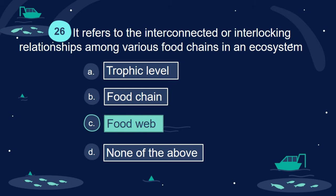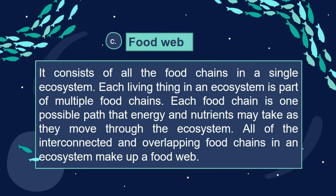Answer: C. Food web. It consists of all the food chains in a single ecosystem. Each living thing in an ecosystem is part of multiple food chains. Each food chain is one possible path that energy and nutrients may take as they move through the ecosystem. All of the interconnected and overlapping food chains in an ecosystem make up a food web.